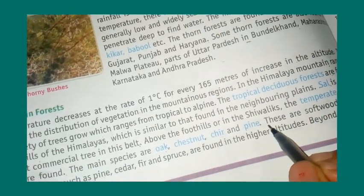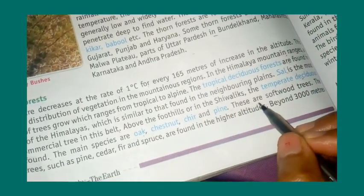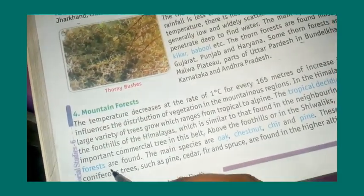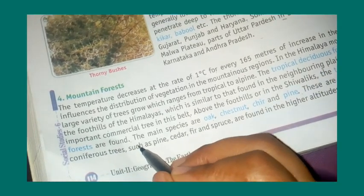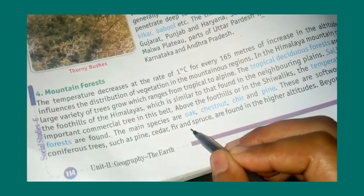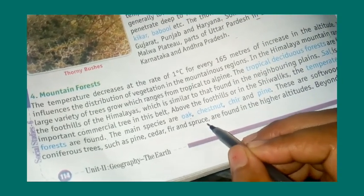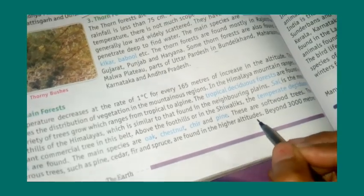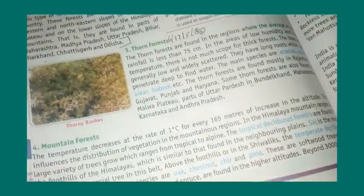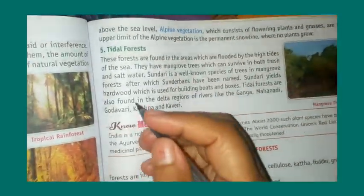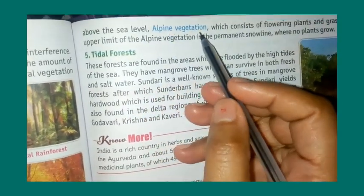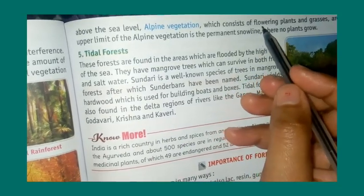Oak, chestnut, and pine are found in this area. These are softwood trees. At higher altitudes, conifer trees such as pine, cedar, and fir are found. Above 3,000 meters above sea level, alpine vegetation begins.